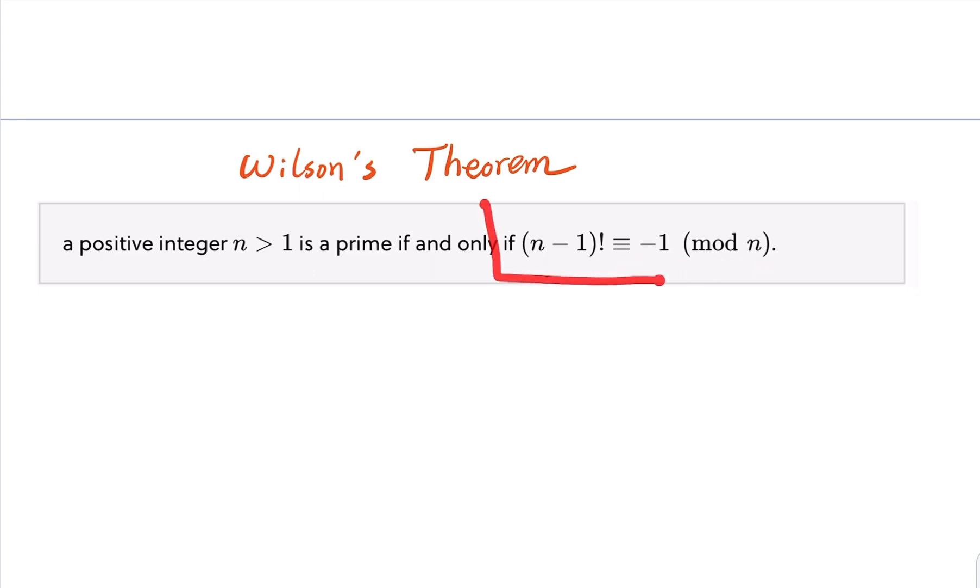But for the composite numbers, we just showed that (n-1) factorial is going to be a multiple of n, except for, for example, number 4. So n has to be greater than 4.